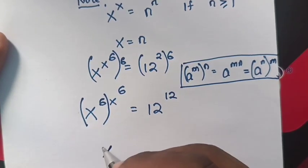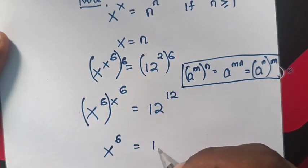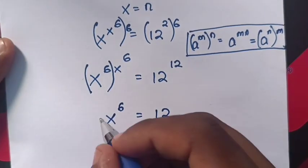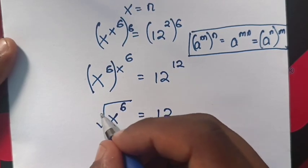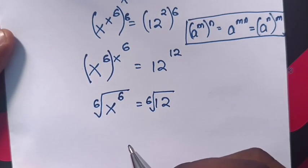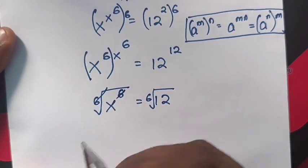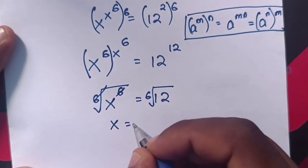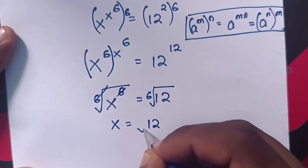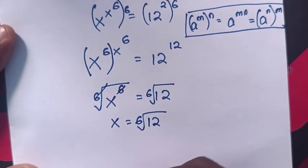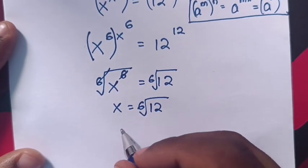So x power 6 equals 12. Then we apply the 6th root on both sides. This will cancel with this. Therefore, x equals the 6th root of 12. So this is the value of x.